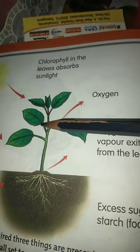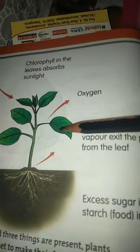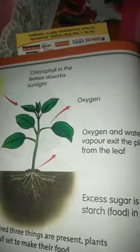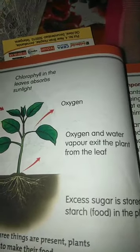The food produced is stored in the plant in the form of starch. Now we are going to see one experiment to find out whether a leaf contains starch or not. Take your rough notebooks and be ready to write the experiment — write your aim, materials, procedure, prediction, observation, and conclusion.